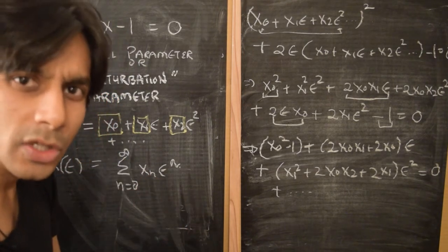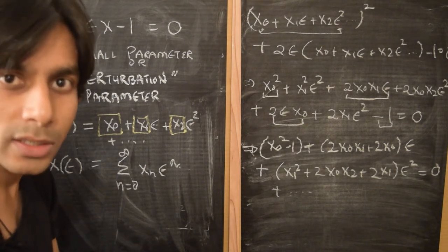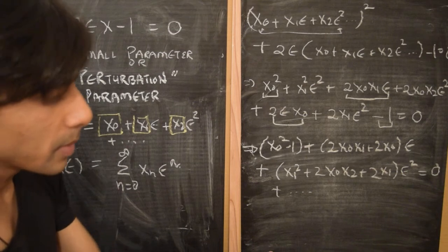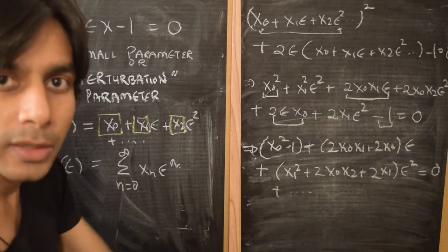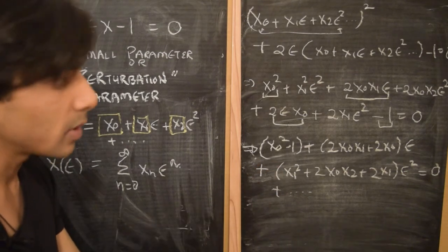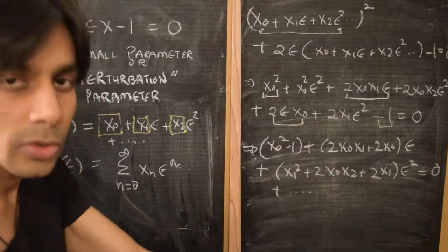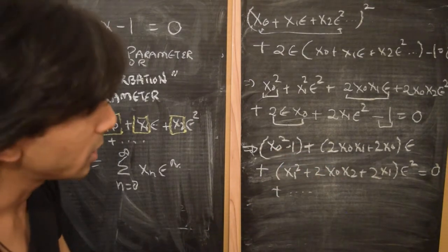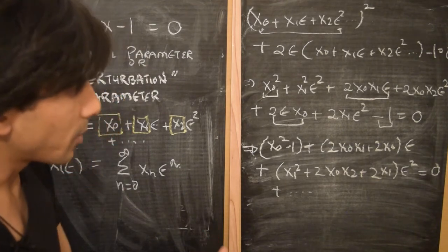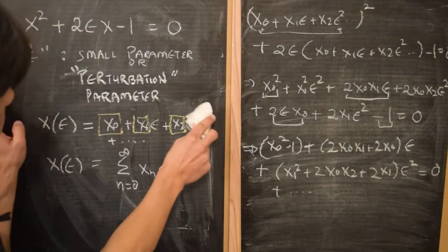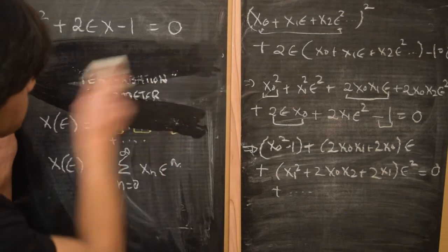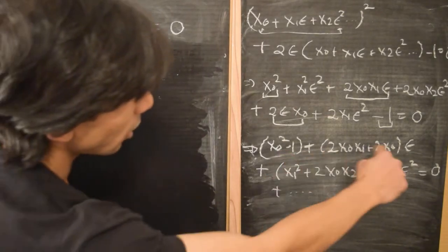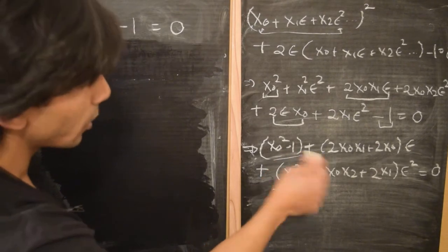So power series representation is like an expansion in a basis of monomials, and all those monomials are linearly independent from each other. And so if the entire series is equal to zero, then all the coefficients must be equal to zero — if a unique power series exists. So with that assumption, what we'll do is take all of these terms and equate them to zero.